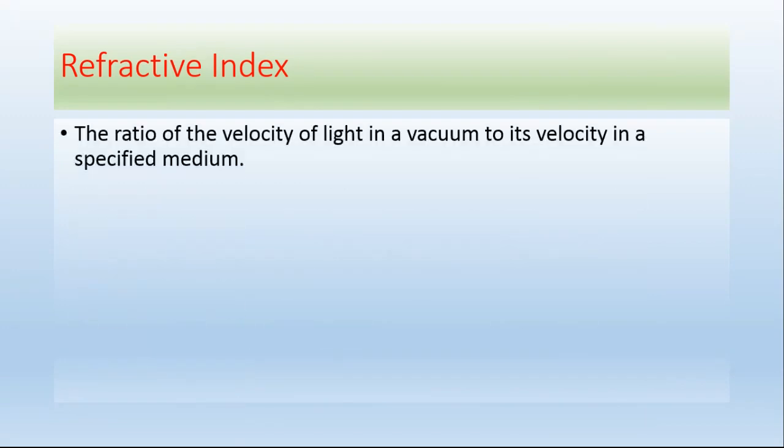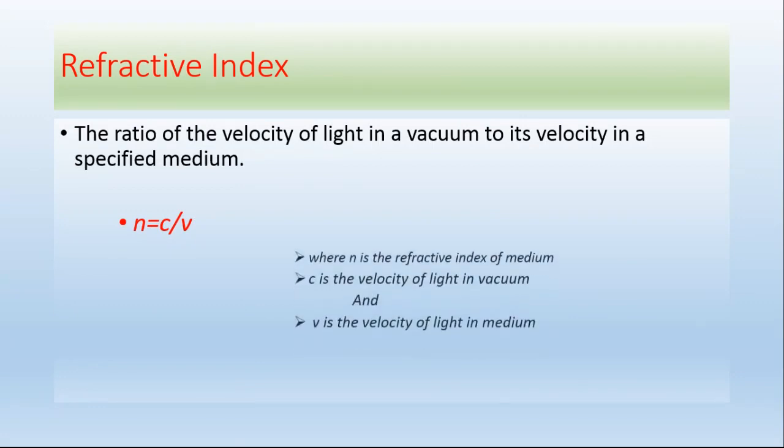Hello everyone. In today's video we will discuss Einstein's special theory of relativity and refractive index. First, I will define refractive index. Refractive index is defined as the ratio of the speed of light in vacuum to its speed in medium. Mathematically, refractive index can be written as n = C/V, where